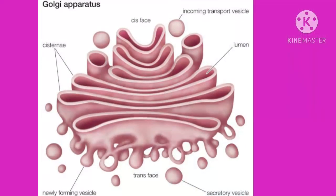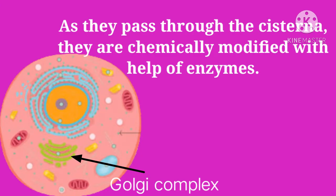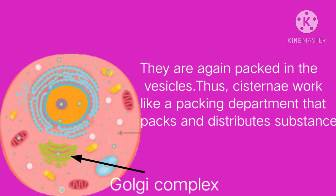In this Golgi complex, the tubular structure you can see in the picture is the cisternae and the round shaped structures are vesicles. The proteins synthesized in the endoplasmic reticulum are carried towards the Golgi complex and packed there. As they pass through the cisternae, they are chemically modified with the help of enzymes and again packed in the vesicles. So the cisternae work like a packing department that packs and distributes substances.